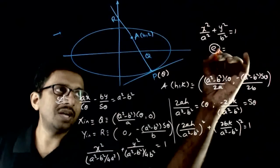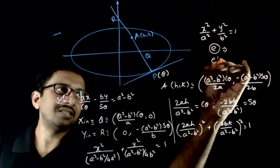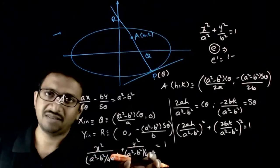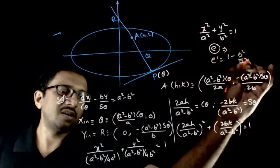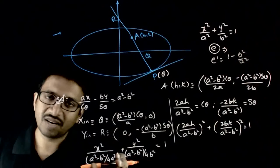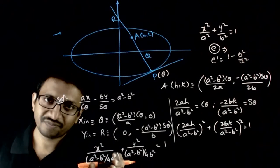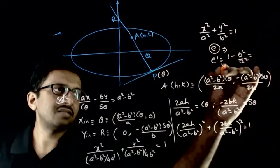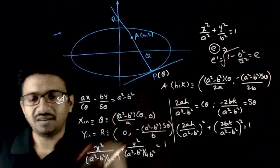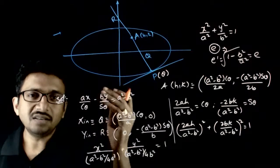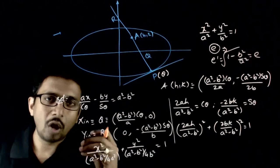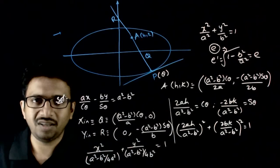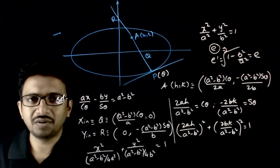The eccentricity formula is 1 minus (smaller axis²)/(bigger axis²). The new eccentricity e' equals 1 minus this ratio. When you compute the ratio, everything cancels and you get b²/a² again, which is the same as e. So the locus is an ellipse with the same eccentricity e. That is the answer.